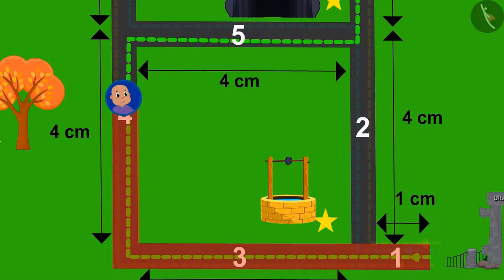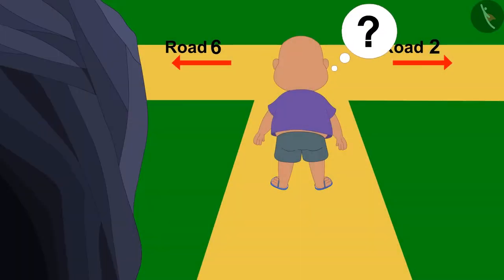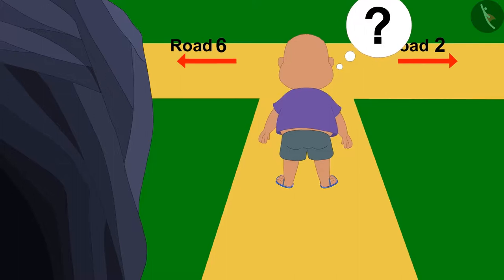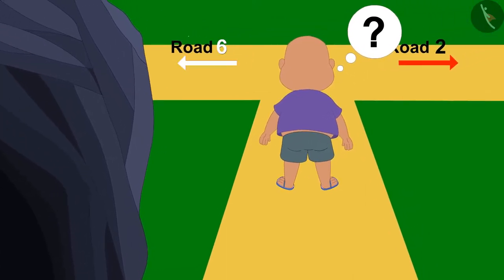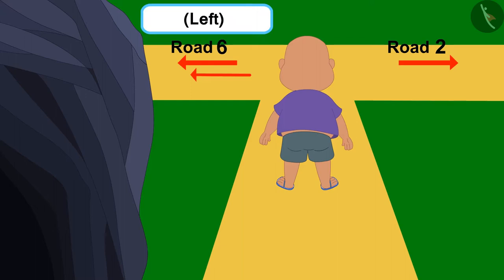Bablu crossed road number 4 in fear and also walked on road number 5 and has come to an end of it. Now, Bablu is thinking which way he has to turn. Can you tell us which direction Bablu has to turn from the unique cave to road number 6? Absolutely right. Towards left.